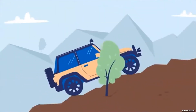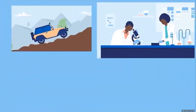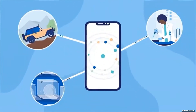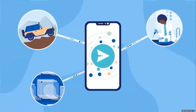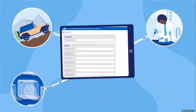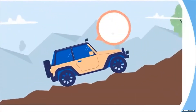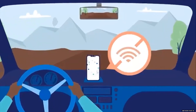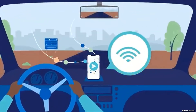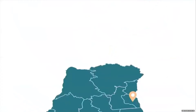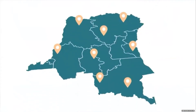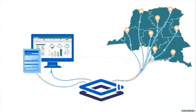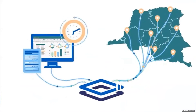Whether you are in the field, in the laboratory, or in an insectary, you can collect data and send it to DHIS2 using your mobile phone, tablet, or computer. In places with poor internet connection, you can collect data offline and send it later once connected to a network. Not only can you collect your own data prospectively in DHIS2, you can also collate data from partners and integrate historical data into the system.